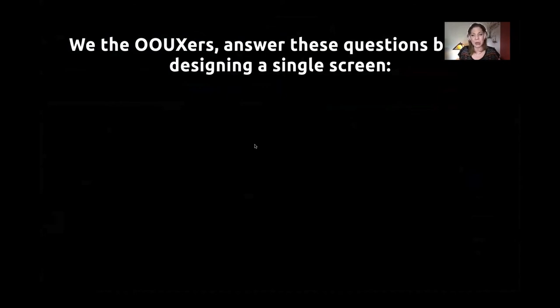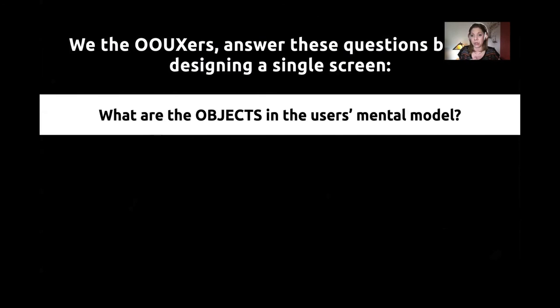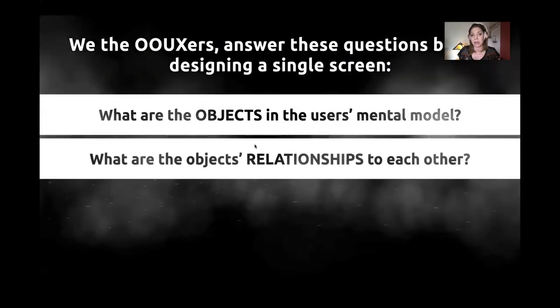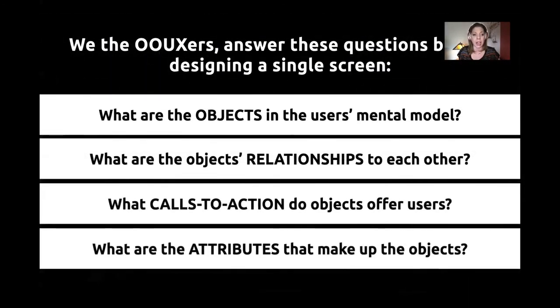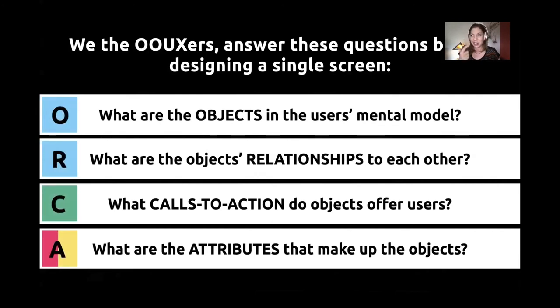So the OUXers' manifesto for what we do before designing a single screen: we figure out what the objects are, what the relationships are, what the calls to action are, and what the attributes are — aligning to the ORCA process.